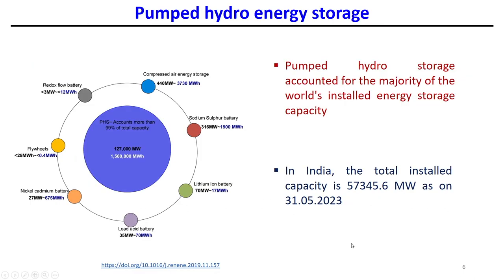Pumped hydro storage accounts for the majority of the world's installed energy storage capacity — about 99% of total capacity. While other technologies such as compressed air energy storage, sodium-sulfur batteries, lithium-ion batteries, lead-acid batteries, nickel-cadmium batteries, flywheels, and redox flow batteries exist, pumped hydro dominates. In India, the total installed capacity is about 57,346.6 MW as of 31st May 2023, with storage capacity of about 127,000 MW.